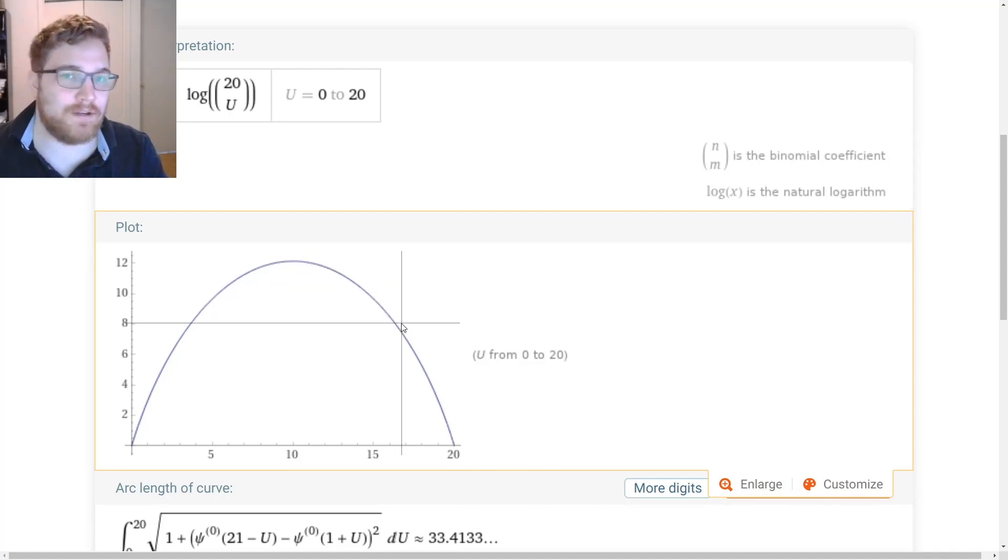After this point, entropy decreases, meaning that we would have a negative temperature. Therefore, we see that in some special cases and special systems of particles, temperature can actually become negative.